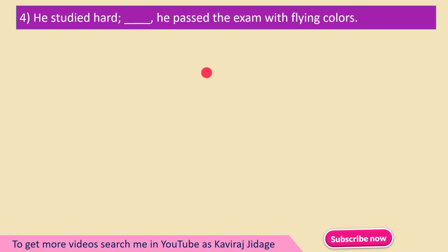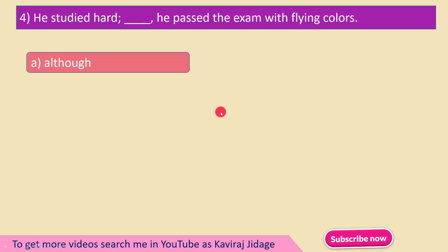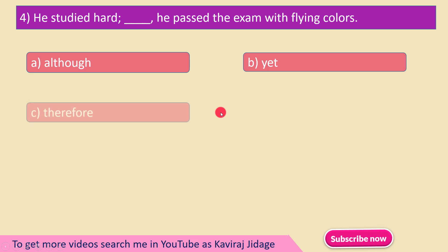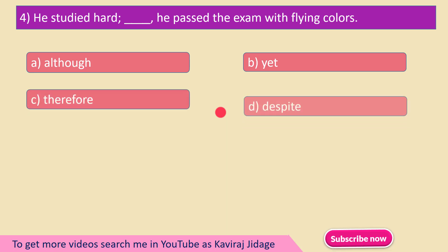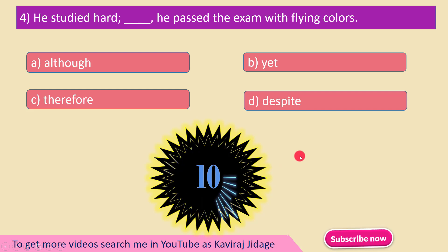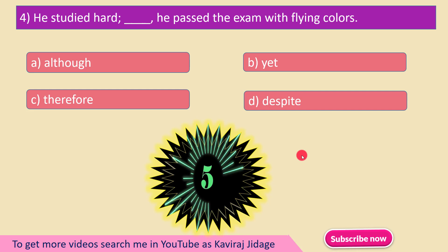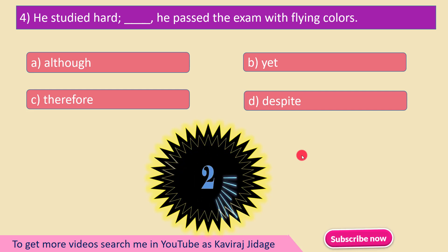Next question: He studied hard. ___ He passed the exam with flying colors. A) Although, B) At, C) Therefore, D) Despite. The answer is Therefore — he studied hard, therefore he passed the exam with flying colors.